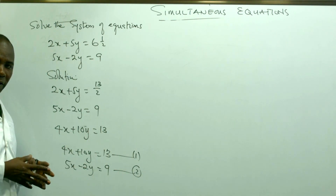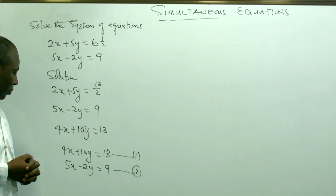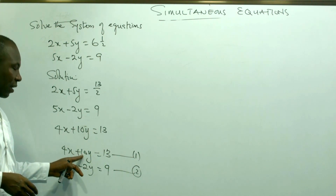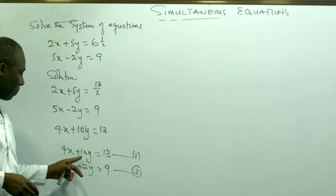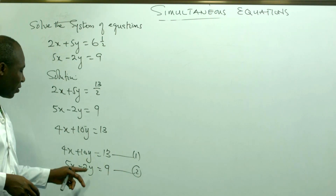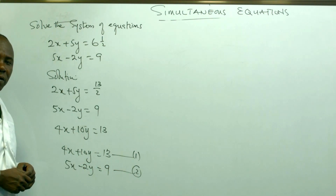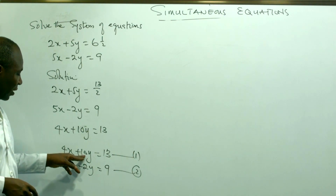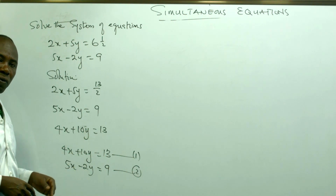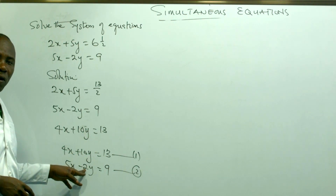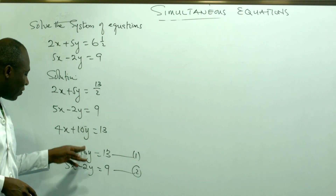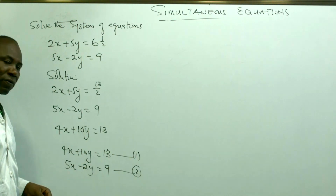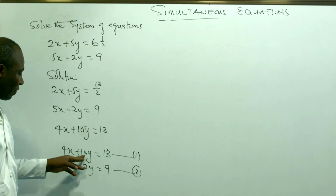Is it x or is it y that we want to eliminate? We can easily see that equation 1 has plus 10y and equation 2 has minus 2y. I want us to eliminate y. If you want to eliminate y, look at the coefficients: here it is 10 and here it is 2. They have to have the same coefficient before you can remove them. I can see that 2 is a factor of 10.